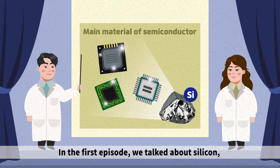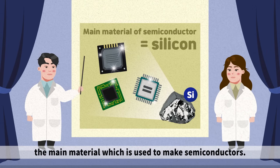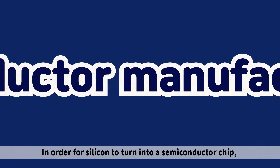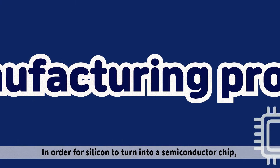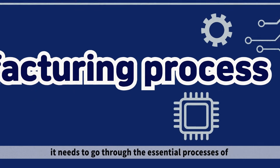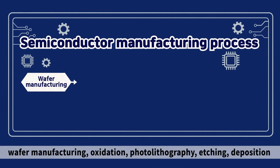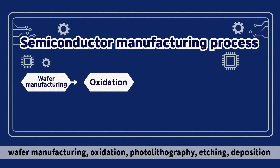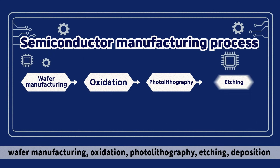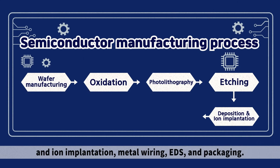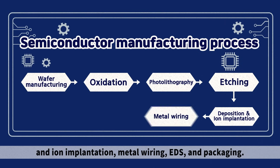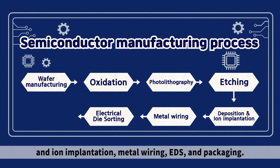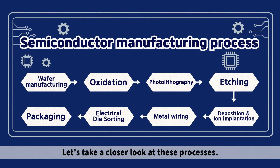In the first episode, we talked about silicon, the main material which is used to make semiconductors. In order for silicon to turn into a semiconductor chip, it needs to go through the essential processes of wafer manufacturing, oxidation, photolithography, etching, deposition and ion implementation, metal wiring, EDS, and packaging. Let's take a closer look at these processes.